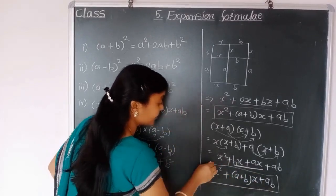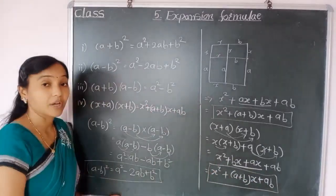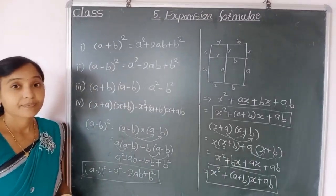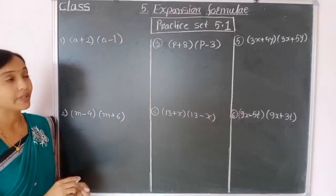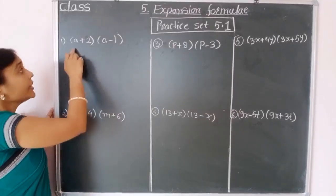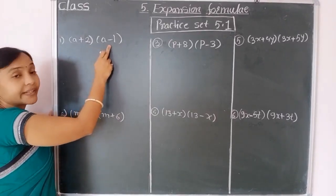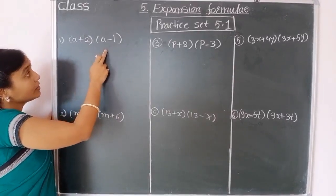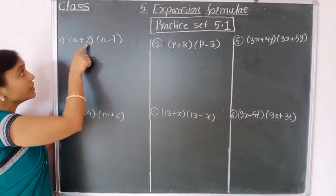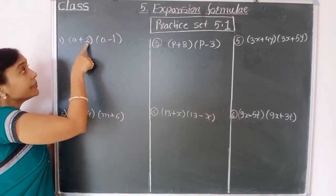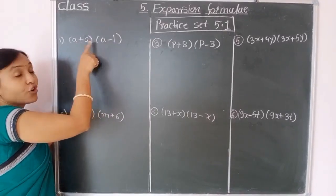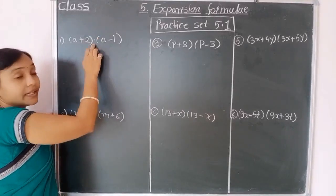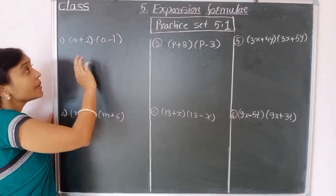So you will learn all four formulas. Example number 1: a plus 2 into a minus 1. Here we cannot use any formula because the variable a is the same but b values are not the same — we have plus 2 and minus 1. So directly, this bracket is multiplied into this bracket.